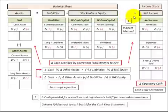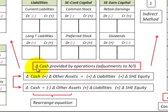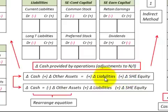Here we're going to be looking at the cash provided by operations for the cash flow statement using the indirect cash flow method, by making adjustments to net income. We're going to look at this change in cash in terms of the accounting equation where assets equal liabilities plus stockholders' equity. The assets are broken down between cash and other assets, so the change in cash plus the change in other assets equals liabilities plus stockholders' equity.